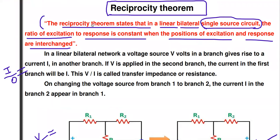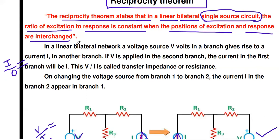This is the important two-mark question definition: the reciprocity theorem states that in a linear bilateral single-source circuit — this is important — the reciprocity theorem is applicable only for a linear bilateral circuit with a single source. If two or three sources are connected, it is not possible to verify this theorem. In that circuit, the ratio of excitation to response is constant when the position of input and output is interchanged.